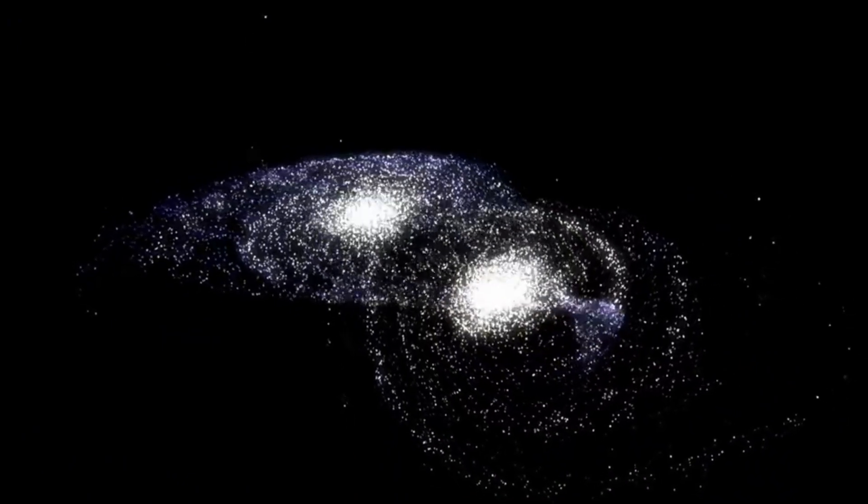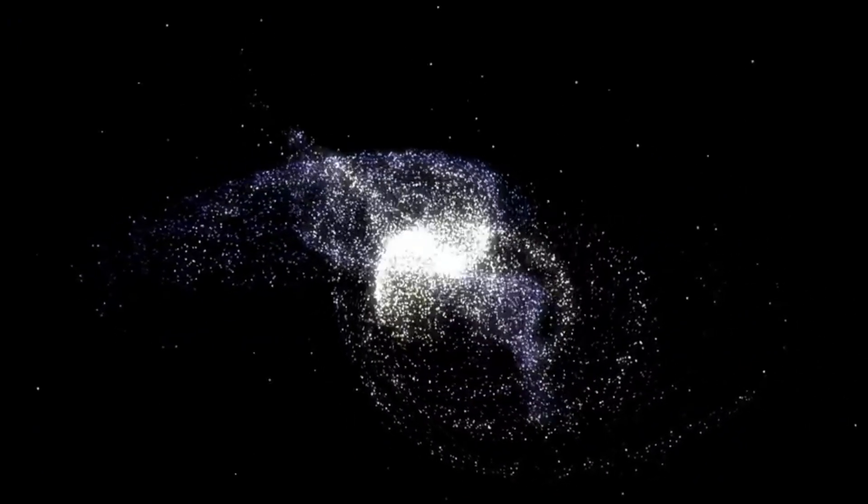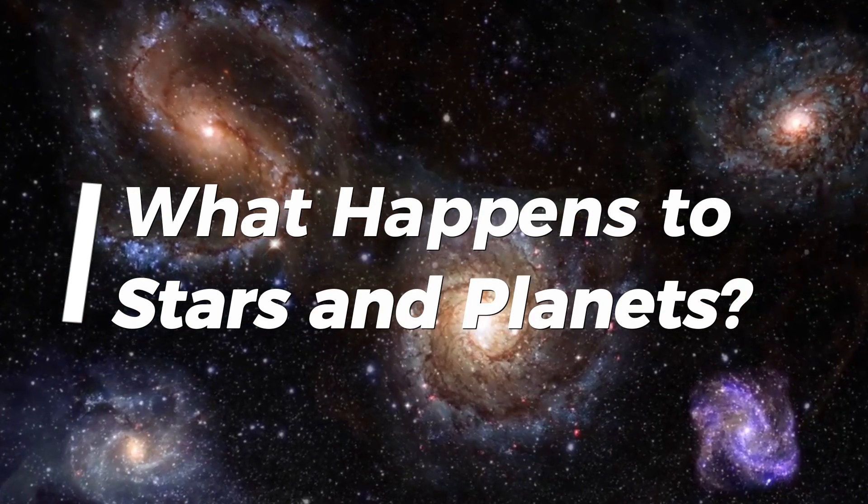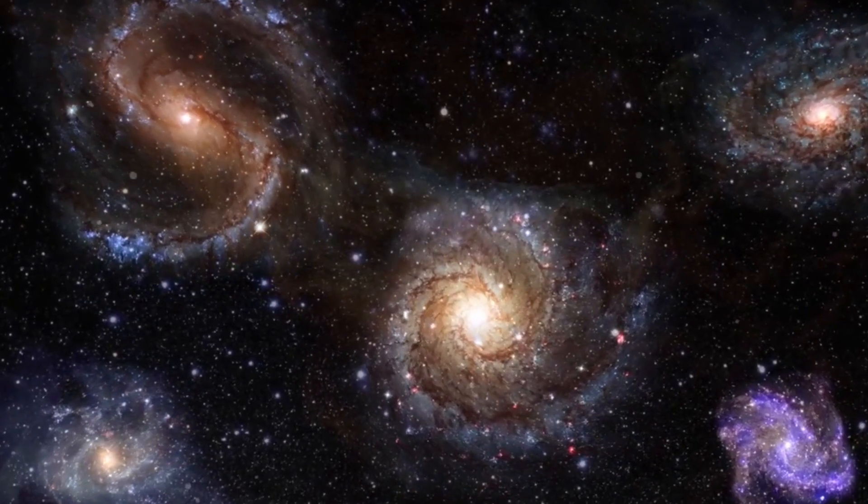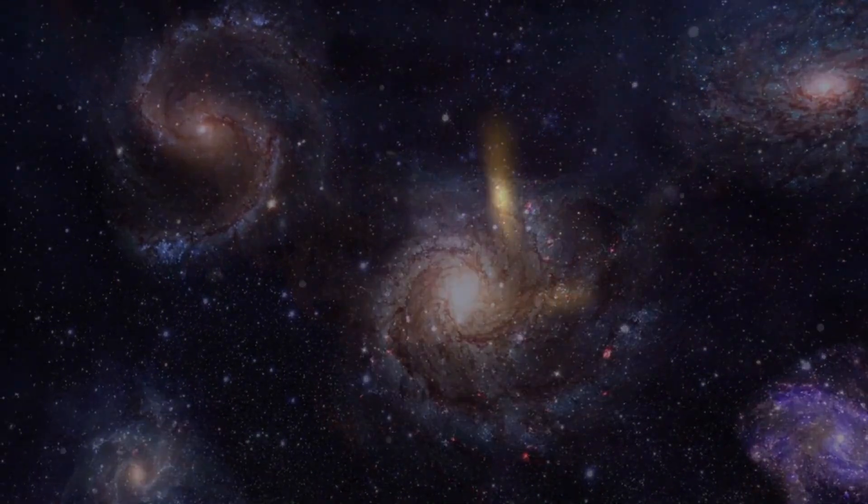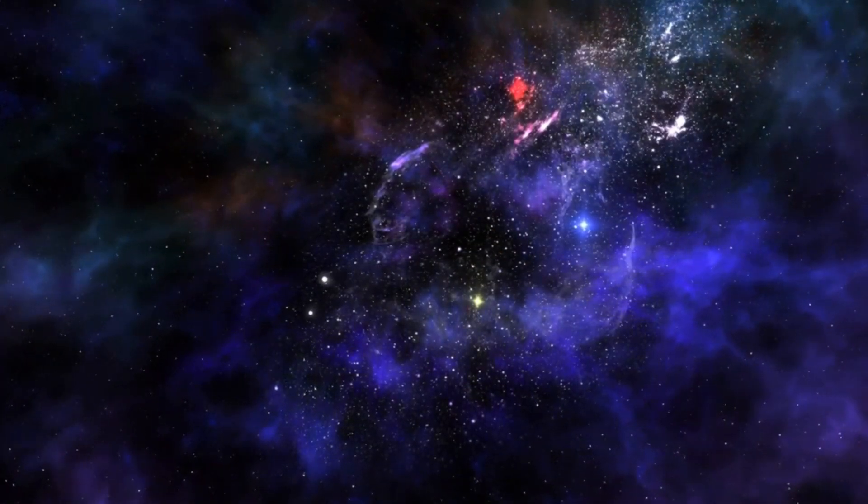The Milky Way-Andromeda merger will warp the very shape of our stellar neighborhood. But what about individual stars and planets? Because galaxies are mostly empty space, direct stellar collisions are extremely rare during mergers. Instead, the galaxies pass through each other gravitationally. Stars respond to the changing overall gravity as the galaxies unite. Their orbits dramatically expand, shrink or shift depending on location. But stars remain intact.